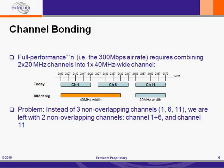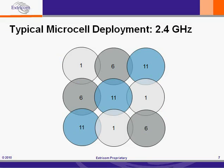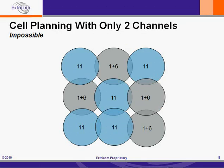The problem is that at 2.4 GHz, if we implement channel bonding, instead of three non-overlapping channels 1, 6, and 11, we are left with two non-overlapping channels: channels 1 plus 6, which is our 40 MHz channel, and channel 11, which is our remaining 20 MHz channel. In a typical microcell deployment at 2.4 GHz with three distinct 20 MHz channels, if we do channel bonding, we now have cells running on the same channel adjacent to each other — the 1-plus-6 channel cells and the channel 11 cells — adjacent all the way through our implementation. Co-channel interference, which is bad enough with three channels, would be even worse with only two.